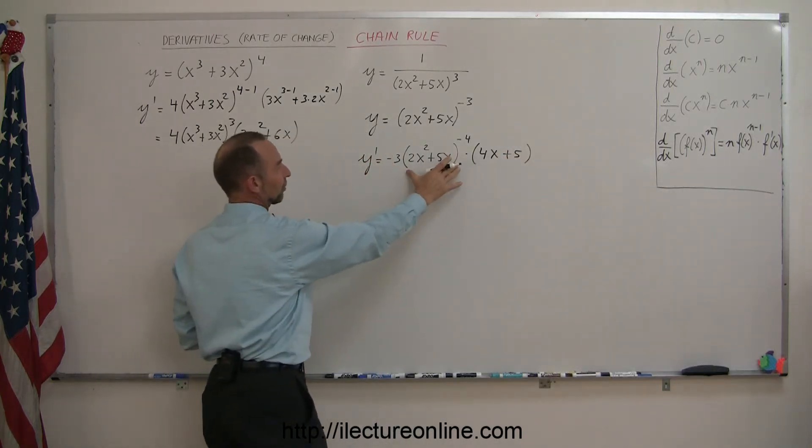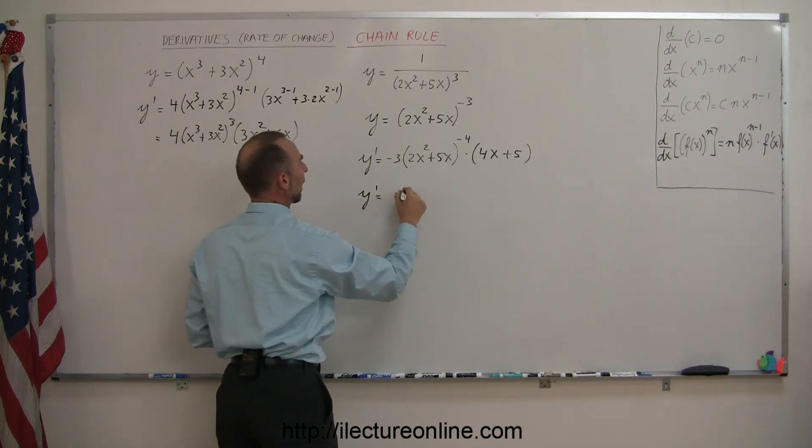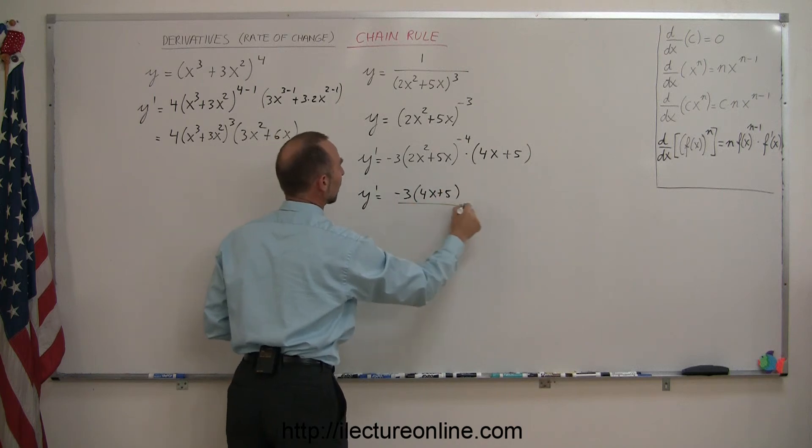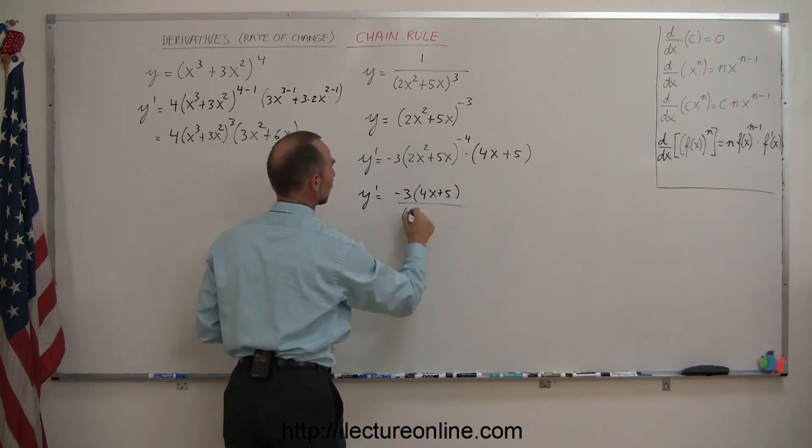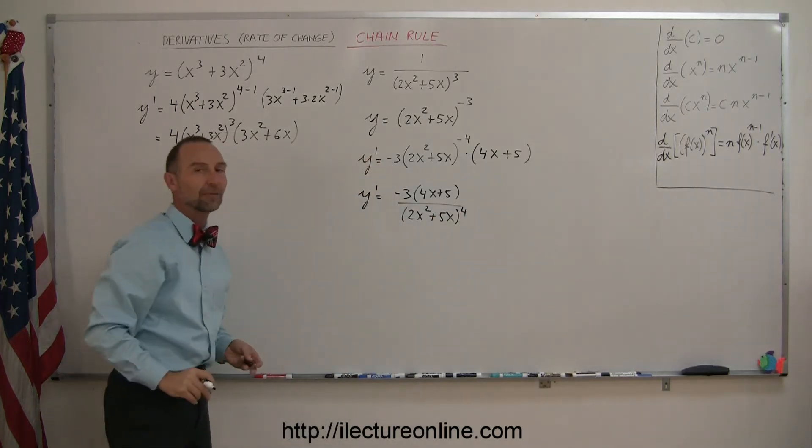And then, since that's a negative exponent, we can bring it back to the bottom. We can then say y prime is equal to minus 3 times 4x plus 5, divided by 2x squared plus 5x to the 4th power. And that's the derivative of that function.